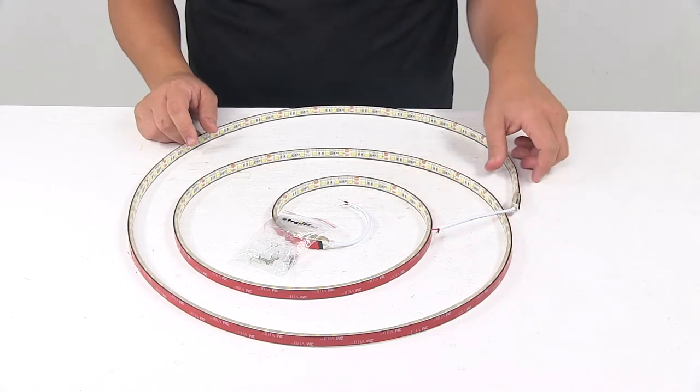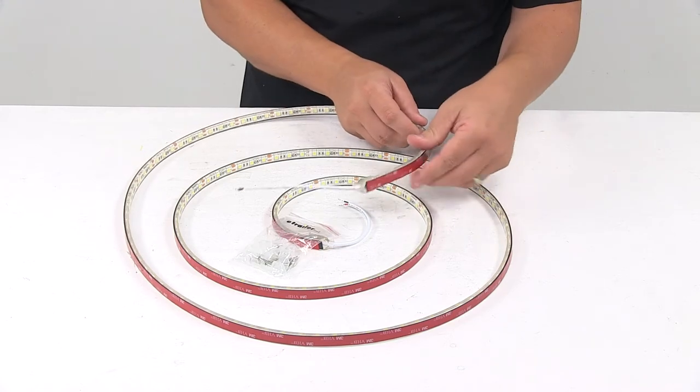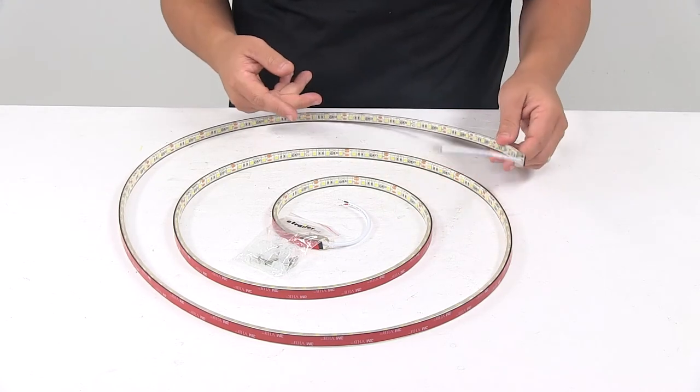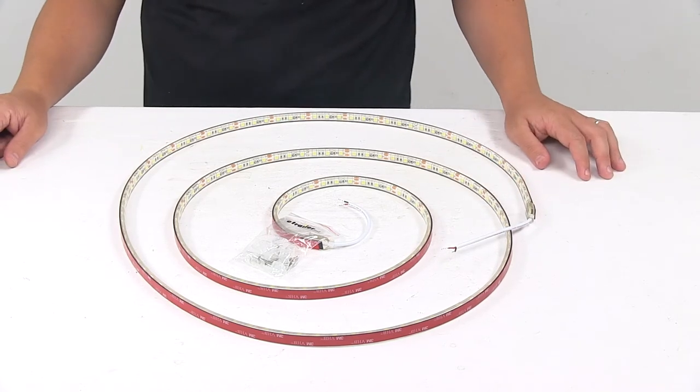Now the strip can actually be cut to length every three LEDs. So every three LEDs there's a line that goes across which indicates a cut mark. Gives you some options for customizing your setup.